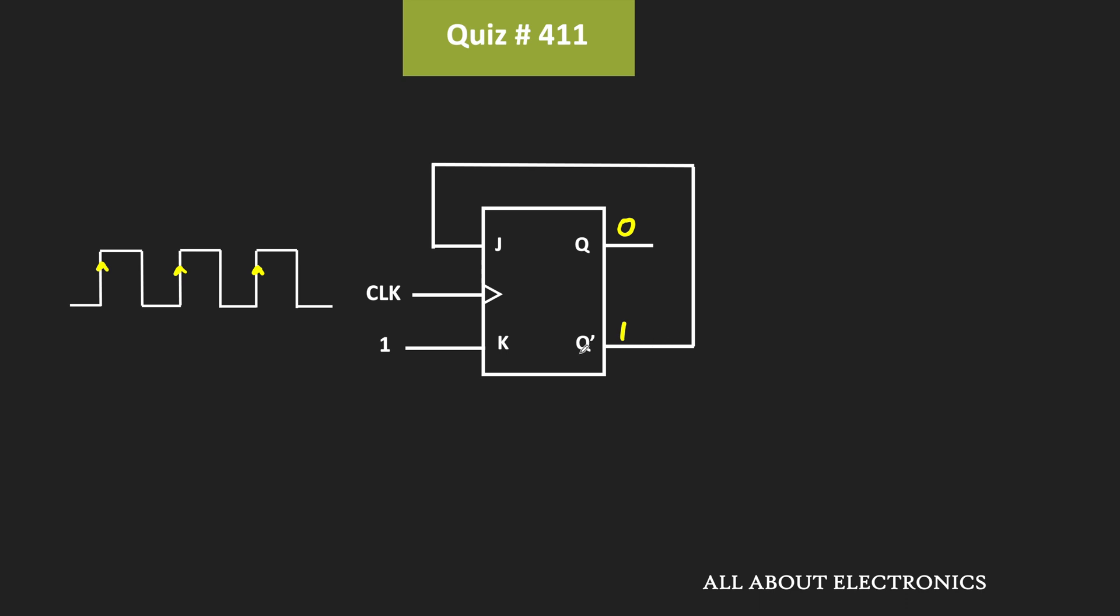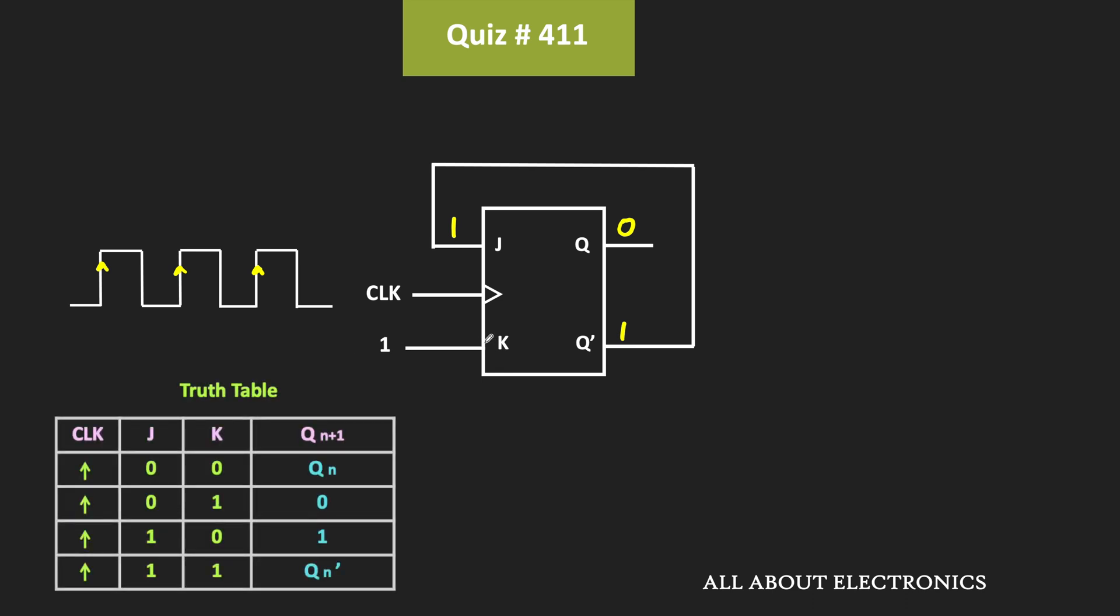And the same 1 will also appear over here. That means now, at the rising edge of the clock, if you see, then this J input is equal to 1, while the K input is also equal to 1. So as you know from the truth table of the JK flip-flop,